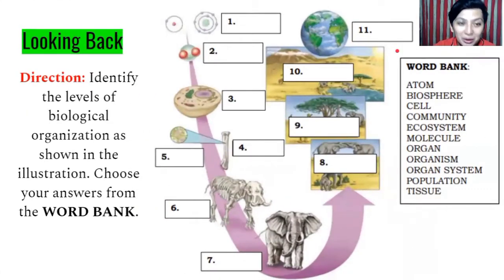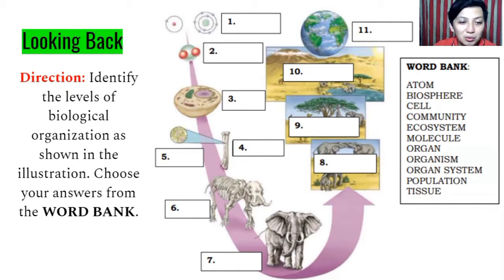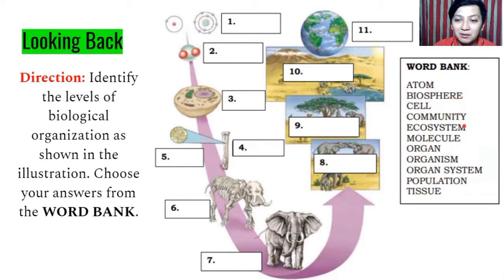Let's have a short looking back. All we have to do is identify the levels of biological organization as shown in the illustration. Choose your answers from the word bank. We have atom, biosphere, cell, community, ecosystem, molecule, organ, organism, organ system, population, and tissue.